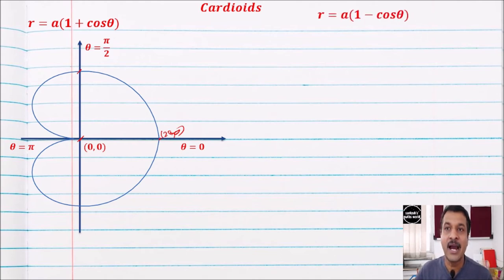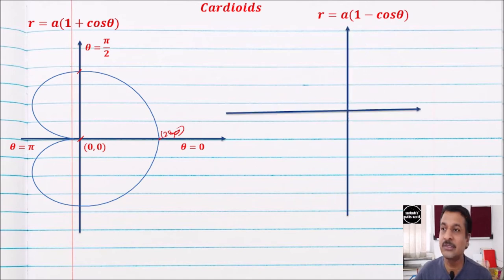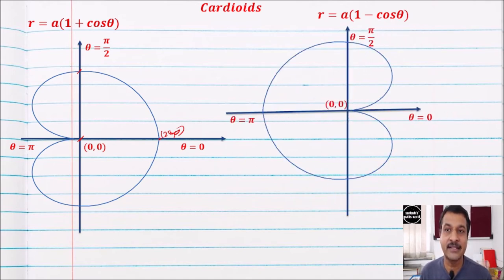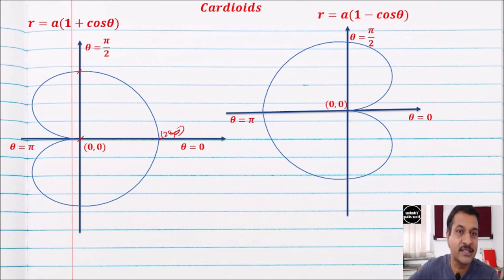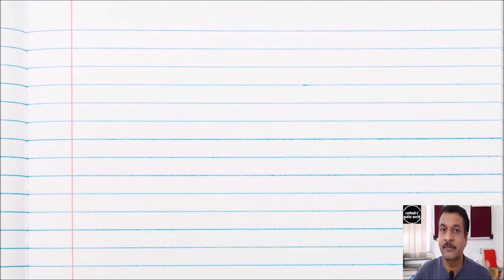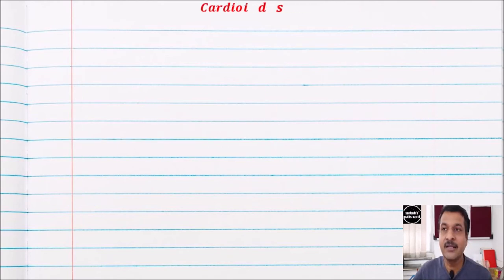Similarly, r = a(1 − cos θ) gives a similar cardioid but in the negative direction, because when θ = 0, 1 − 1 = 0, so r = 0.